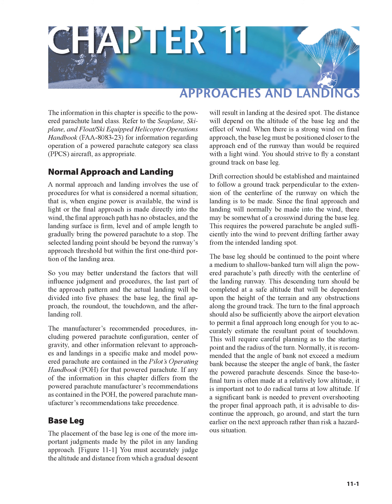So you may better understand the factors that will influence judgment and procedures, the last part of the approach pattern and the actual landing will be divided into five phases: the base leg, the final approach, the roundout, the touchdown, and the after-landing roll. The manufacturer's recommended procedures, including powered parachute configuration, center of gravity, and other information relevant to approaches and landings in a specific make and model powered parachute, are contained in the Pilot's Operating Handbook (POH) for that powered parachute.